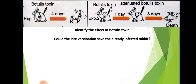In the second experiment, we have Rabbit C. We inject it with the same fatal toxin — bottlis toxin — which is lethal. But after one day, we also give it an attenuated bottlis toxin, meaning a vaccine against this bacterium called bottlis toxin.